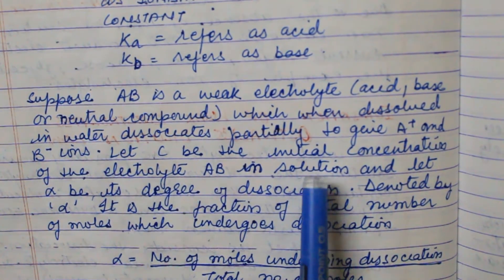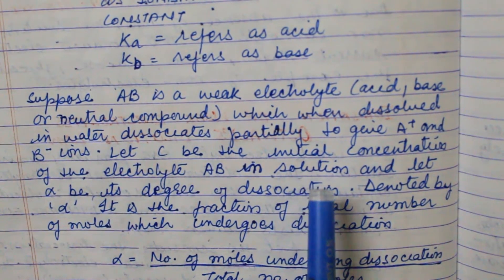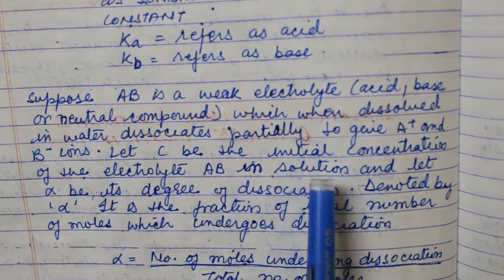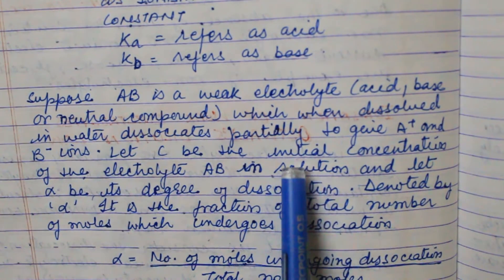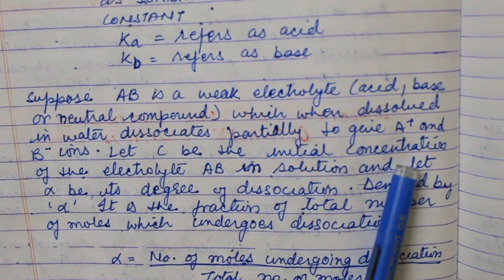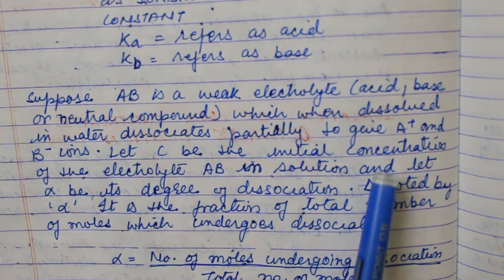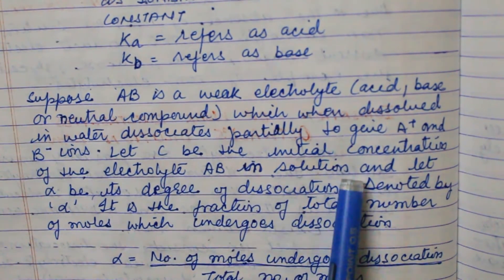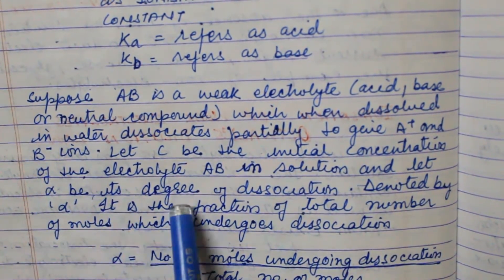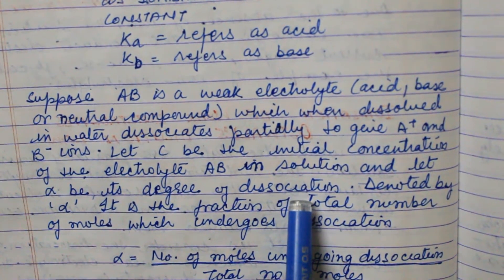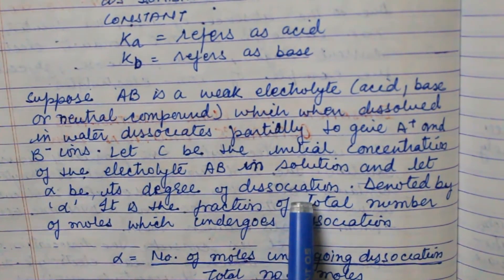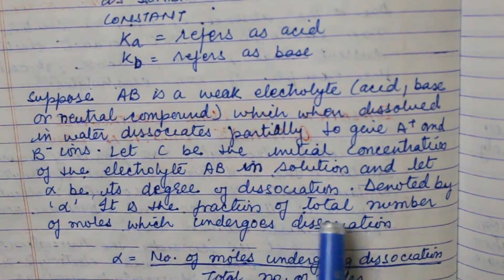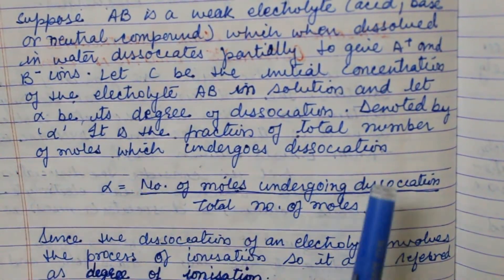Let C be the initial concentration — initial means when the reaction has just started. The starting point of the reaction is known as initial concentration because only the reactant is present. The product is not yet formed; the reaction is in its initial state. Let alpha be the degree of dissociation — when the ions get dissociated, they have some degree denoted by alpha.